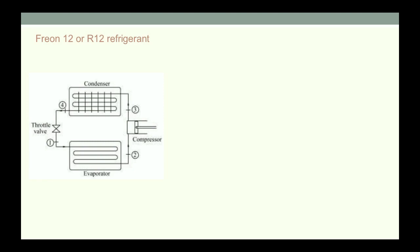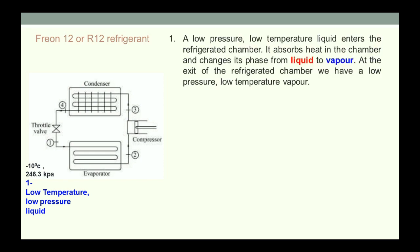After knowing the components of the refrigerator, we try to understand how it works. The refrigerant entering the evaporator will be at low temperature and low pressure liquid, normally minus 10 degrees centigrade and 246.3 kilopascal. This liquid refrigerant, when it enters the evaporator, absorbs heat from the surroundings and becomes vapor. In this way, the refrigerant coming out of the evaporator will be low temperature, low pressure vapor.